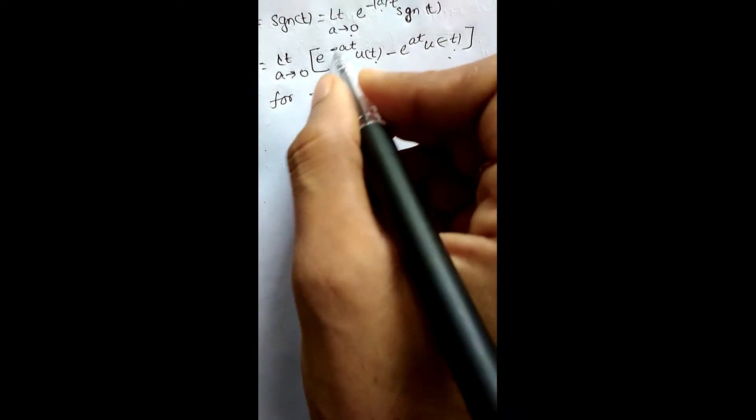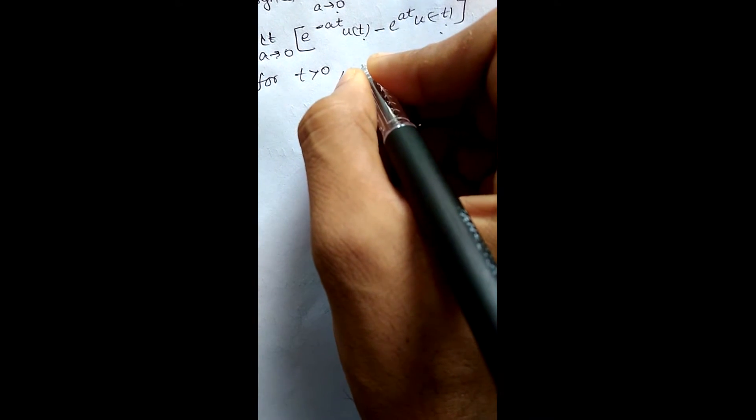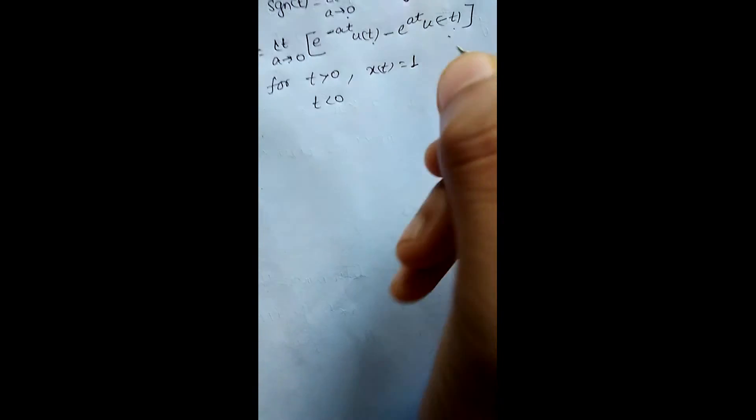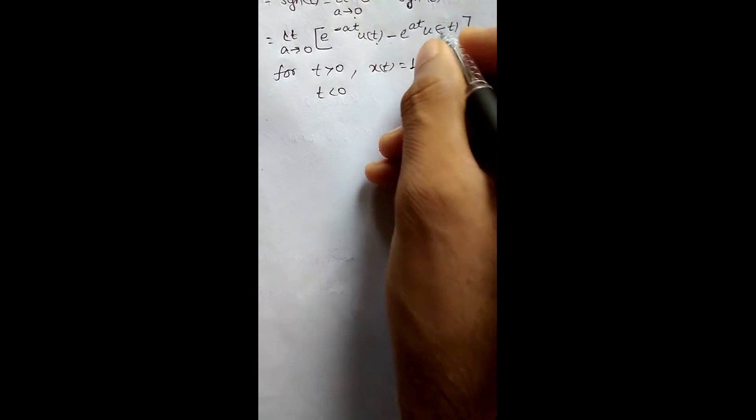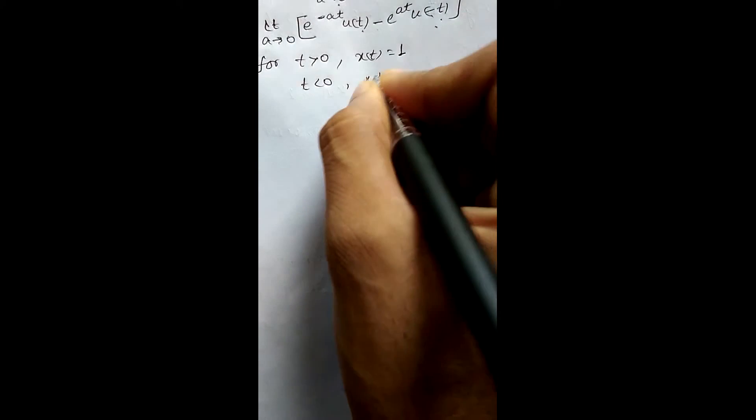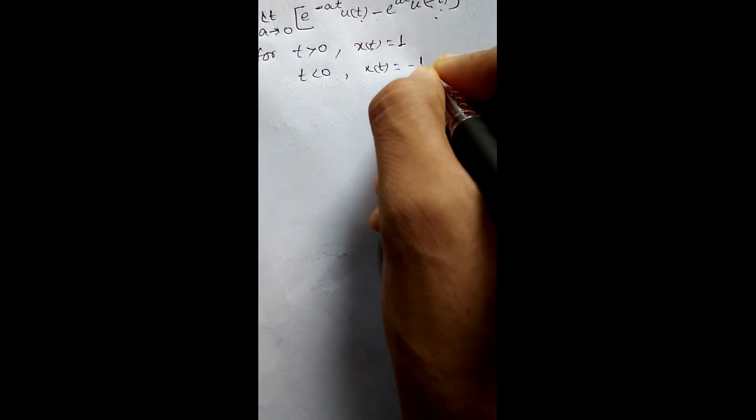I can show you how this equals the signum function. For t greater than 0, u(t) equals 1 and u(minus t) equals 0, and if we put a equal to 0 then it simply becomes 1, so x(t) equals 1. For t less than 0, u(minus t) equals 1 and u(t) equals 0, and if we put a equal to 0 then it becomes minus 1, so x(t) equals minus 1.